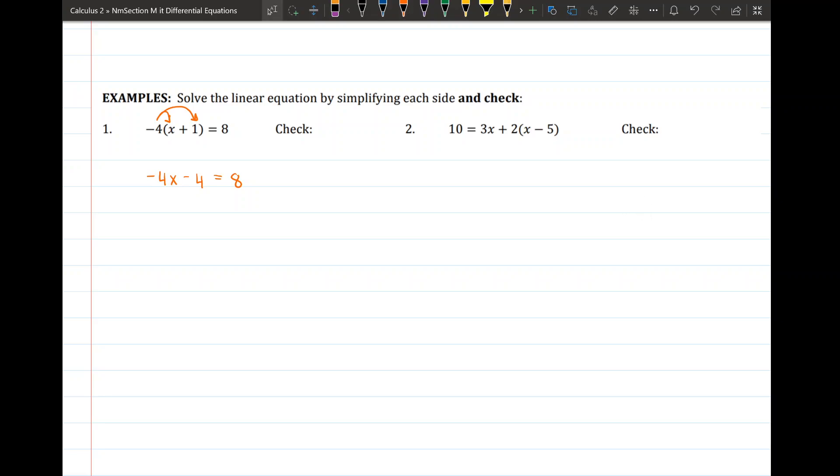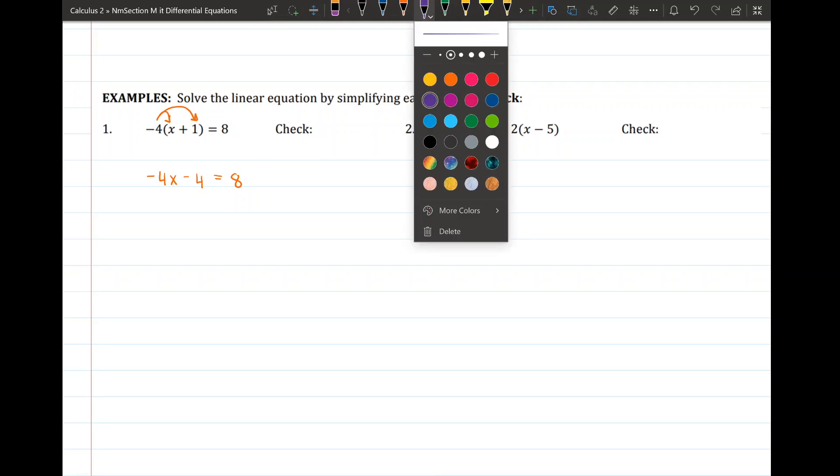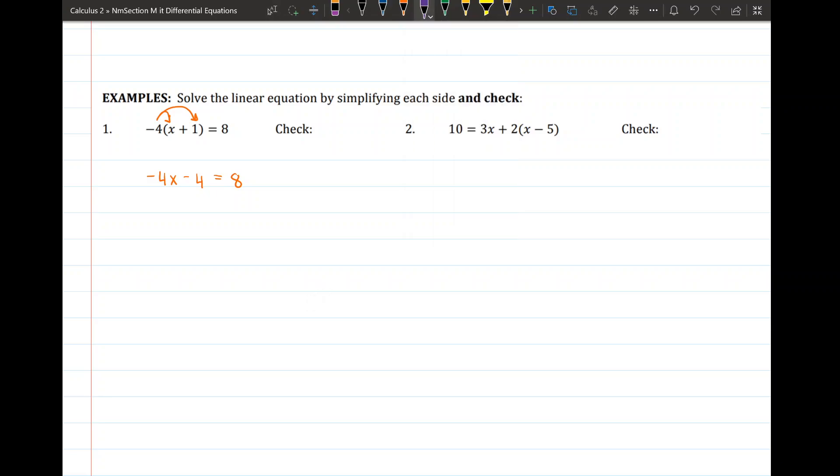Now I'm going to use the inverse operation to get the negative 4 to the other side, undo subtraction by addition. So I should be left with here negative 4x is equal to 12. Now I'm going to divide by negative 4 to undo that multiplication and I should be left with x is equal to negative 3.